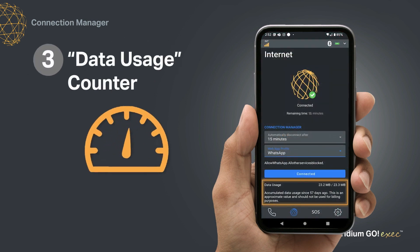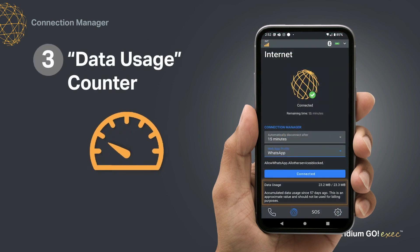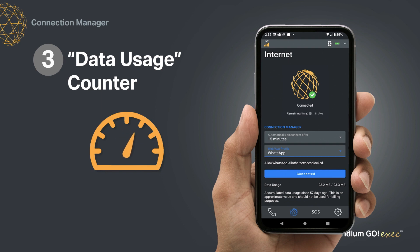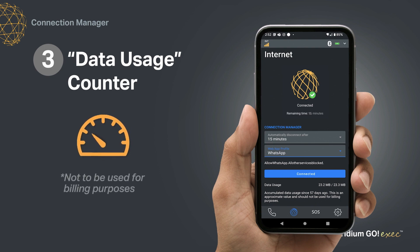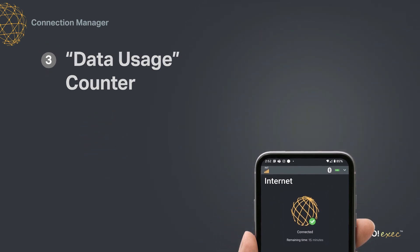Data Usage shows you how much satellite data you've sent and received. Your total data usage would be a sum of both. You can reset the counter from the Settings menu on the Iridium Go Exec device or in the app. Please note, this is only meant to inform you of your approximate data usage. It is not to be used for billing purposes.